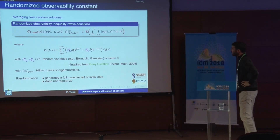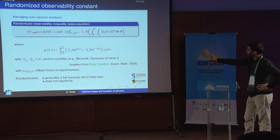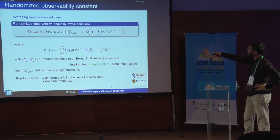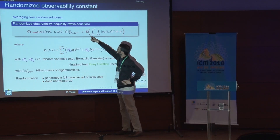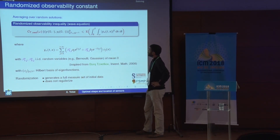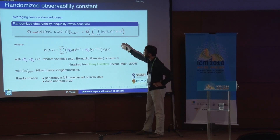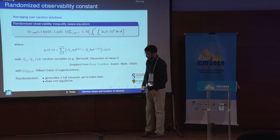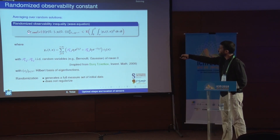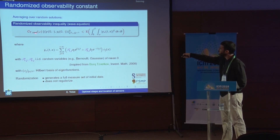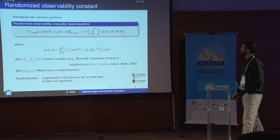Randomizing the wave solution in this way, we define a new randomized observability inequality just by adding an expectation term against the integral, where the expectation runs over all possible events. This gives a new observability inequality, different from the deterministic one, and in turn a new randomized observability constant defined as the largest possible constant such that this inequality holds.